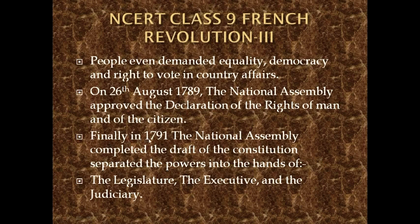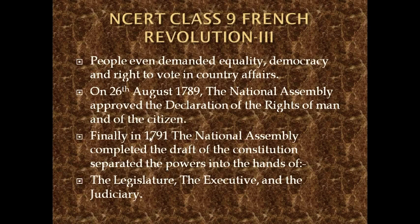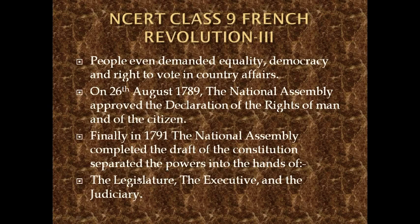Finally in 1791, the National Assembly completed the draft of the constitution and separated powers. Previously all power had lain in the hands of the monarchy — the king had divine right from God. But because of the National Assembly's 1791 constitution, powers were separated into three branches: the legislature, the executive, and the judiciary — what we also call vidhai palika, kaaryapalika, and nyaypalika.